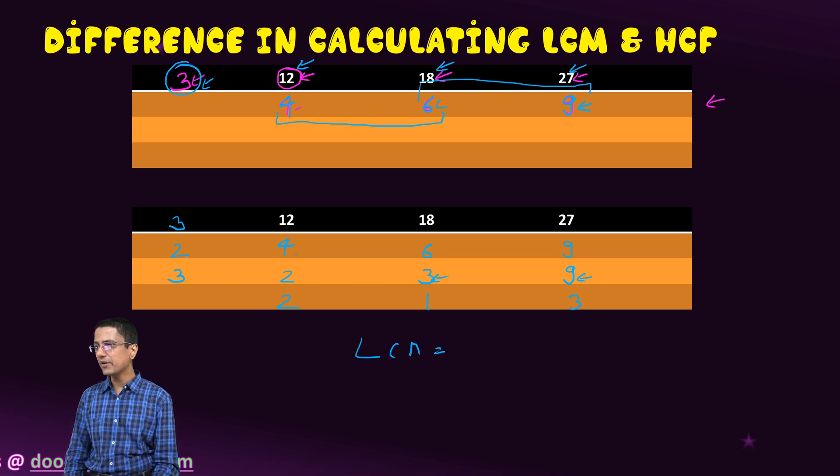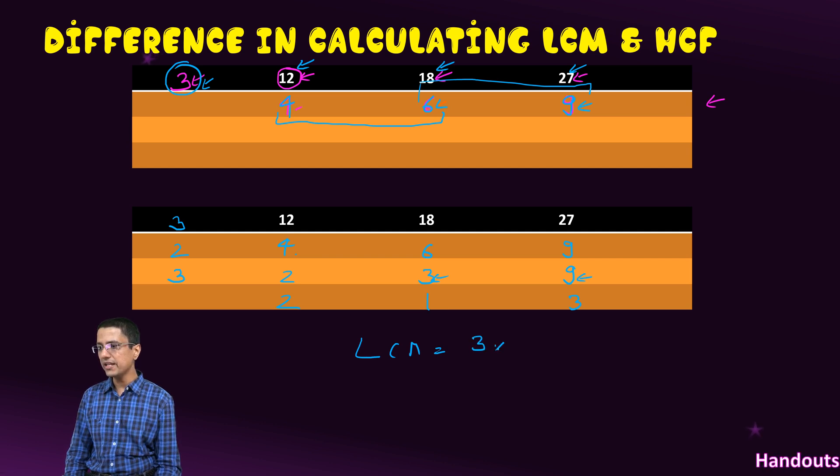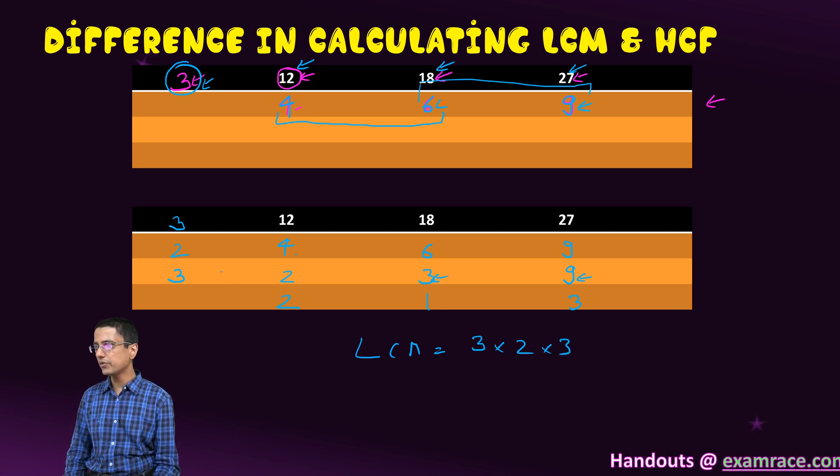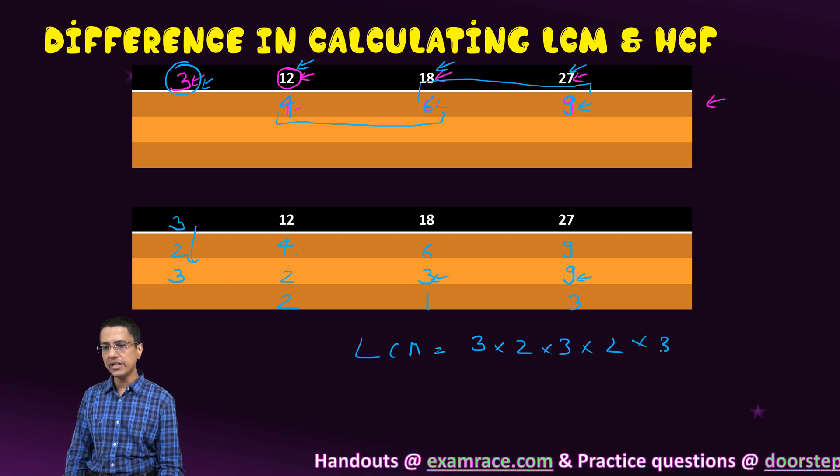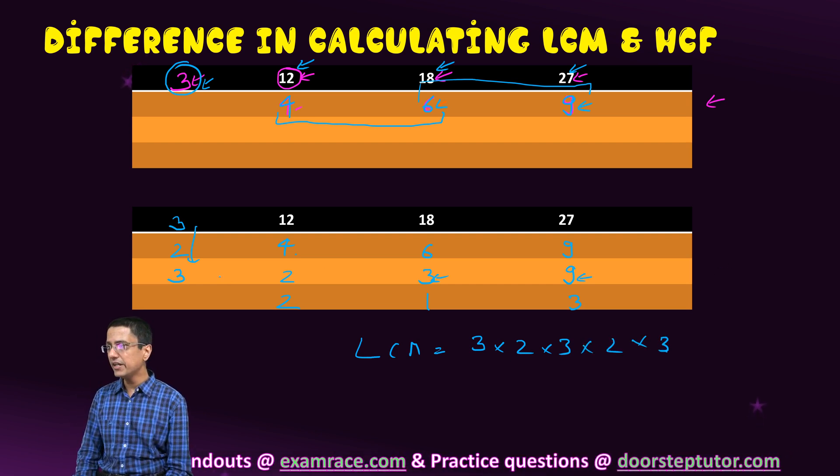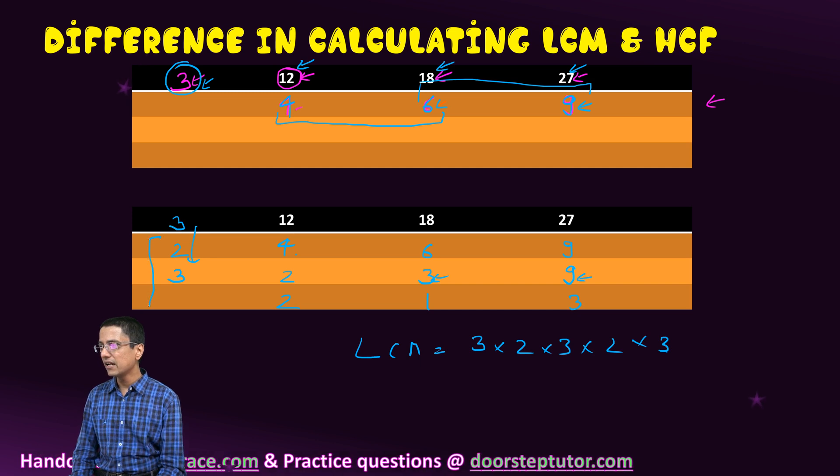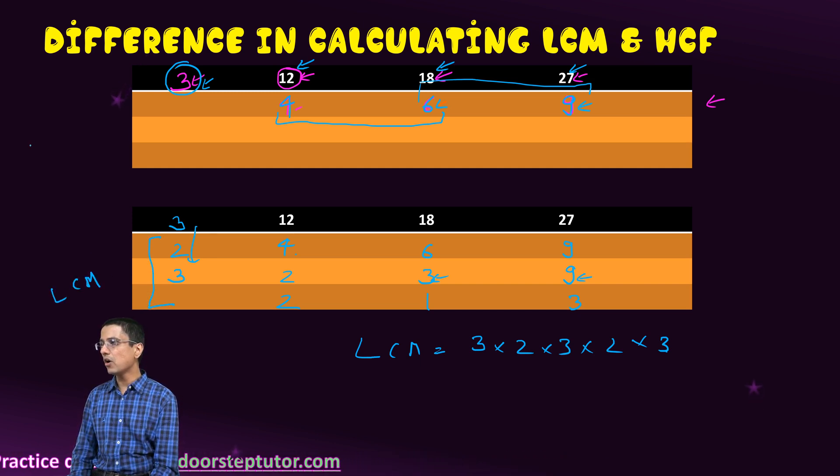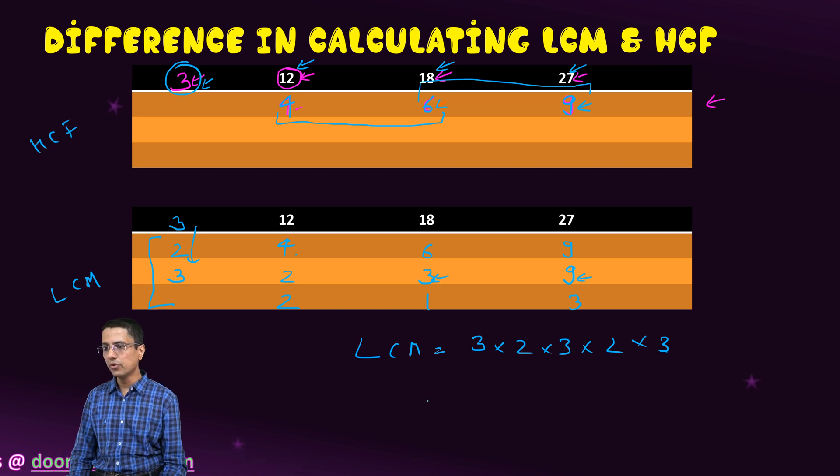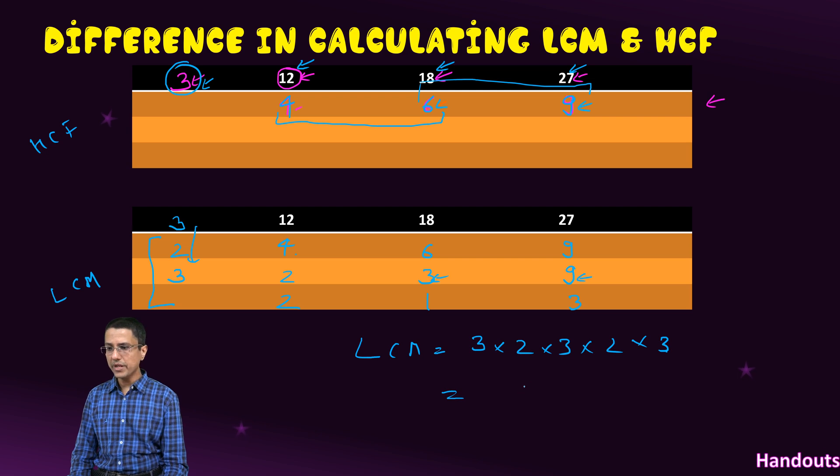Our LCM then becomes 3 times 2 times 3. This becomes 3 into 2 into 3, and then into 2 into 3. So the key difference was that we continued the division afterwards in case of LCM but not in the case of HCF. Note that difference, and the answer if you were to compute it would come out to be 108.